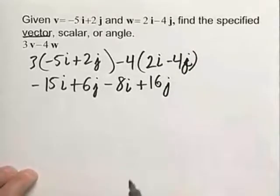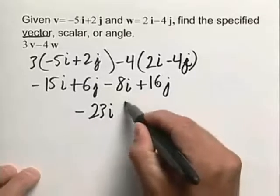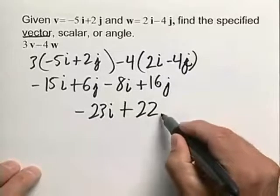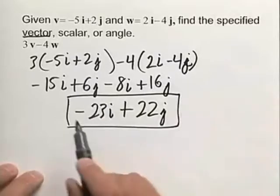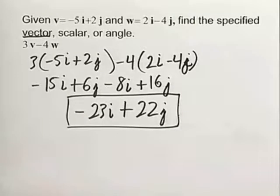Combining our like terms here, we end up with negative 23i plus 22j, and so this is our resultant vector. When we get 3v minus 4w, we've done it.